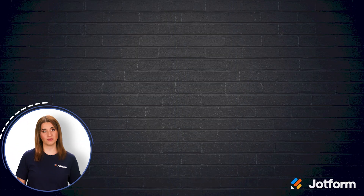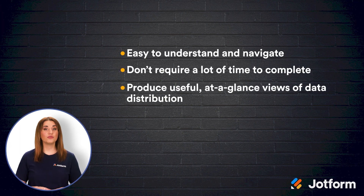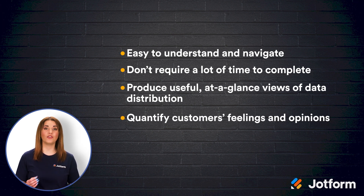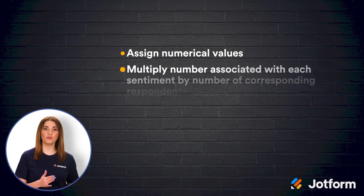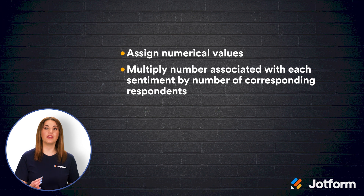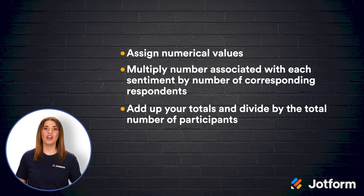Let's review. 5-point Likert Scales provide a number of benefits: they're easy to understand and navigate, they don't require a lot of time to complete, they produce useful at-a-glance views of data distribution, and they quantify important data like feelings and opinions. To analyze your survey responses, start by assigning a numerical value to each sentiment level. Then multiply the number associated with each sentiment by the number of respondents for each particular answer. After that, add up your totals and divide by the number of participants. This gives you a sentiment score for that specific survey question, and you can then do the same process for your overall survey sentiment score.